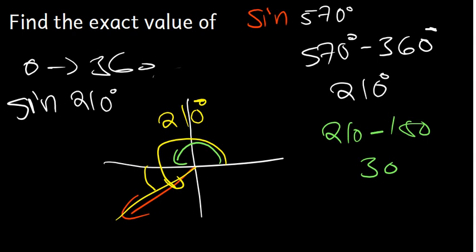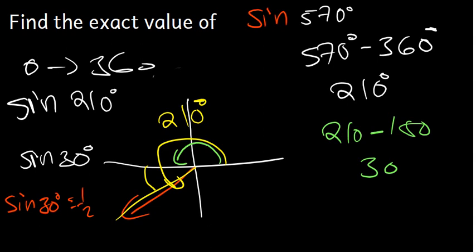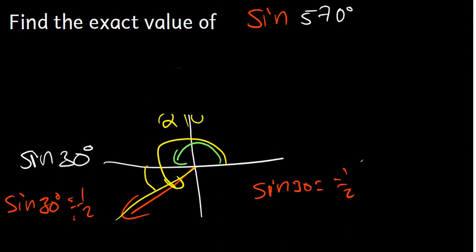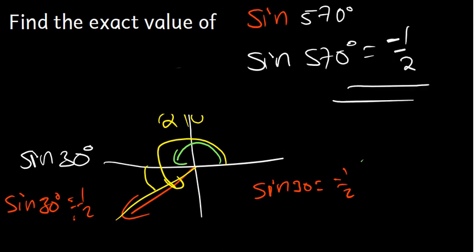So we are finding sine 30 degrees. Sine 30 is 1/2. But we have to check: 210° is in the third quadrant. In the third quadrant, sine is negative — sine is positive only in the first and second quadrants. So the answer is negative 1/2. Therefore, sine 570 degrees equals negative 1/2.